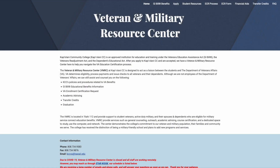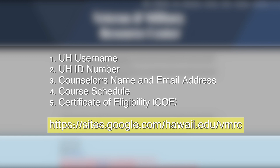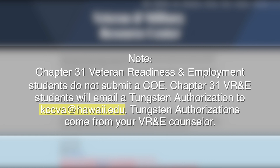Before starting the ECR form, you will need five things: your UH username, your UH ID number, your counselor's name and email address, your course schedule, and your certificate of eligibility. Please note, Chapter 31 Veteran Readiness and Employment students do not submit a COE. Chapter 31 VR&E students will email a Tungsten Authorization to kccva at hawaii.edu. Tungsten authorizations come from your VR&E counselor.